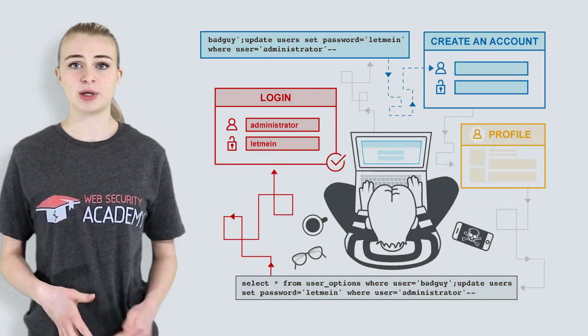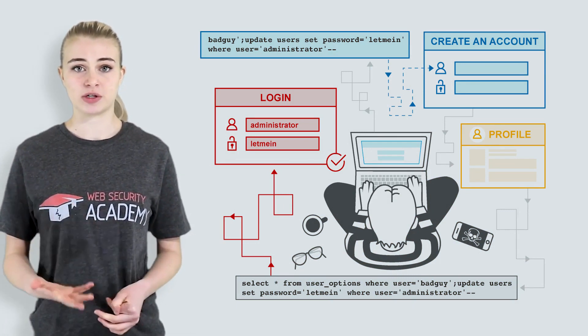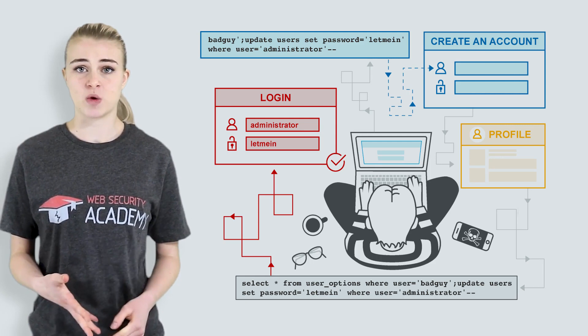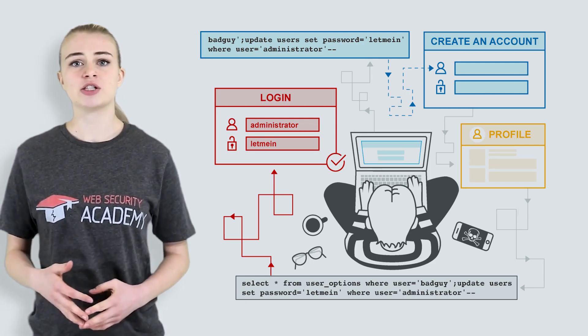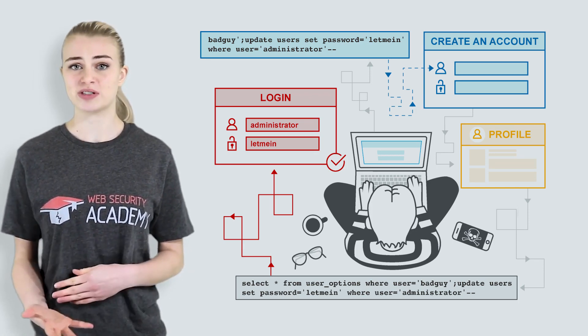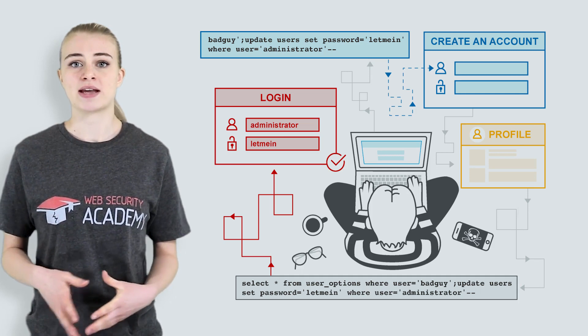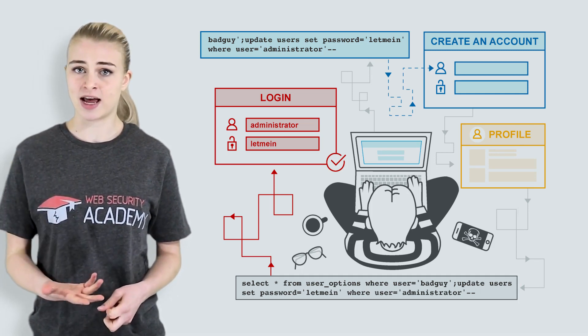First-order SQL injection arises where the application takes user input from an HTTP request and, in the course of processing that request, incorporates the input into an SQL query in an unsafe way. In second-order SQL injection, also known as stored SQL injection, the application takes user input from an HTTP request and stores it for future use — usually by placing the input into a database — but no vulnerability arises at the point where the data is stored. Later, when handling a different HTTP request, the application retrieves the stored data and incorporates it into an SQL query in an unsafe way. Second-order SQL injection often arises in situations where developers are aware of SQL injection vulnerabilities and safely handle the initial placement of input. When the data is later processed, it is deemed safe since it was previously placed into the database safely — at this point the data is handled in an unsafe way because the developer wrongly deems it to be trusted.